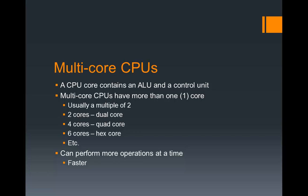So core zero fetches the first line of code, core one can fetch the next one, and then they both can do the steps at the same time. It's kind of like using both hands to type on a keyboard rather than one hand — if you're a touch typist with two hands, you can quickly pass between each key even faster than you would with just one hand. Essentially, having more cores makes the CPU faster because it can do more things at once.